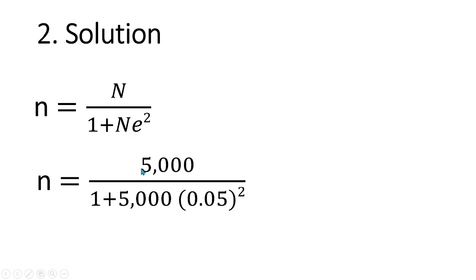By substitution, we have 5,000 divided by 1 plus 5,000 times the square of 0.05, the margin of error.